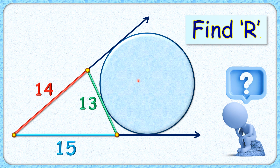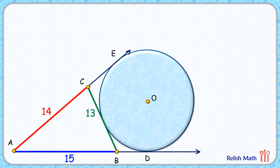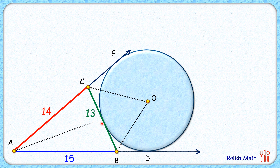In this interesting question, a circle is given with three tangents drawn, and the lengths of the line segments are given as 13, 14, and 15 centimeters. Using this data, we have to find the radius of the big circle. Let's check the solution — we do a small construction and join BO, CO, and AO.